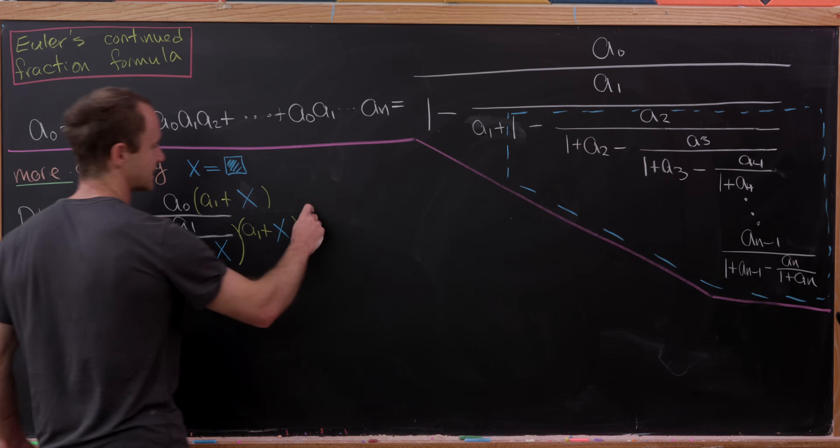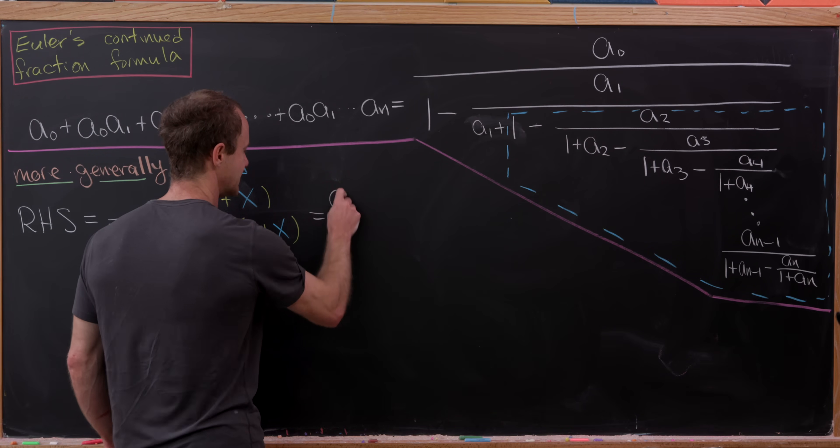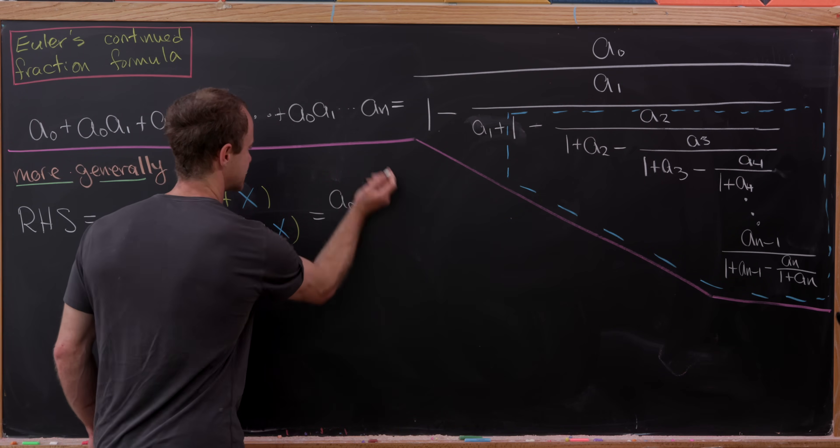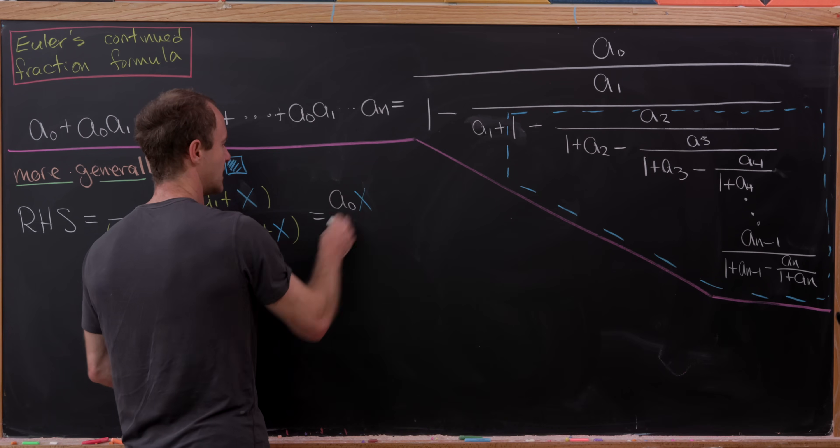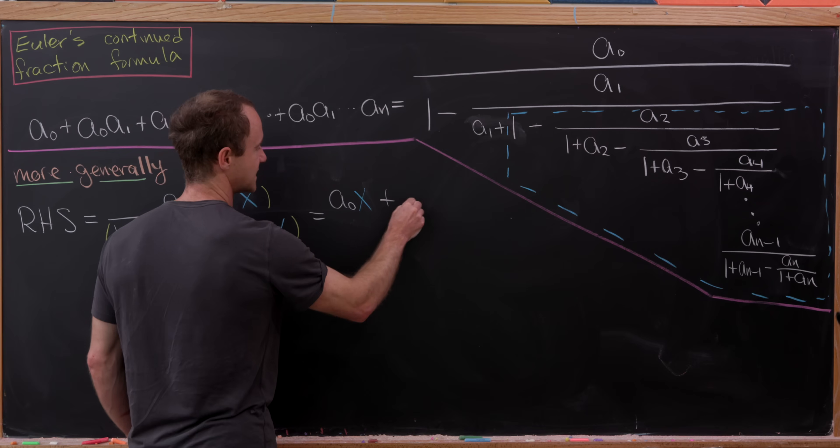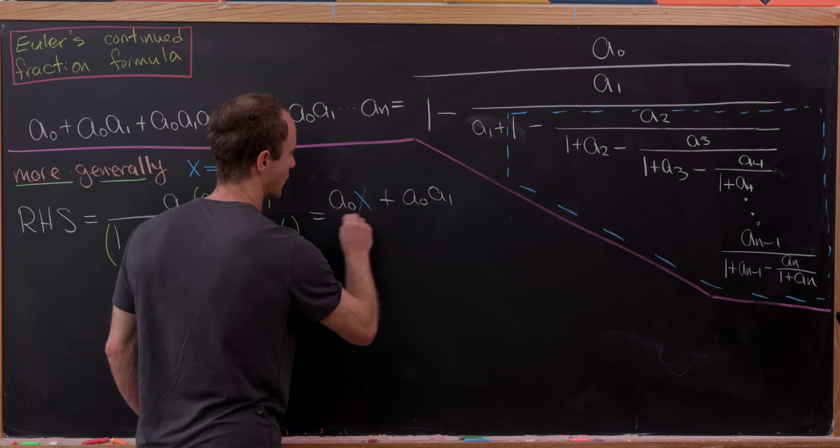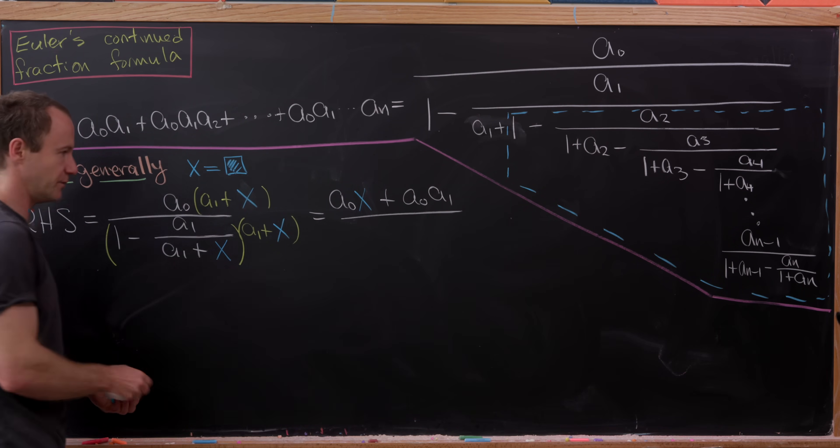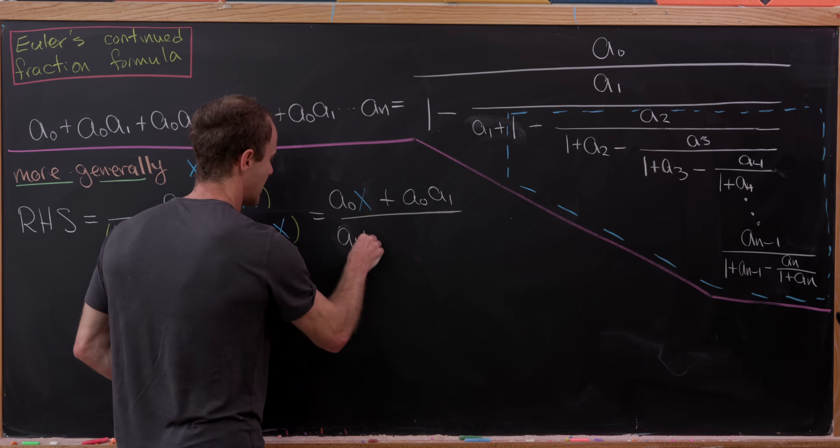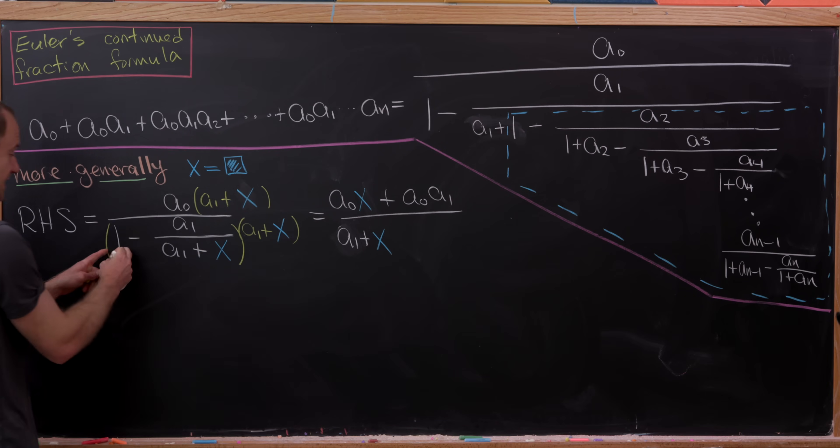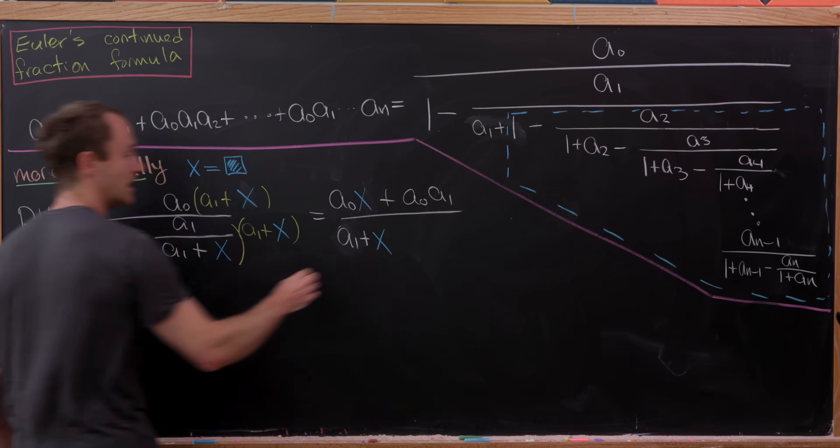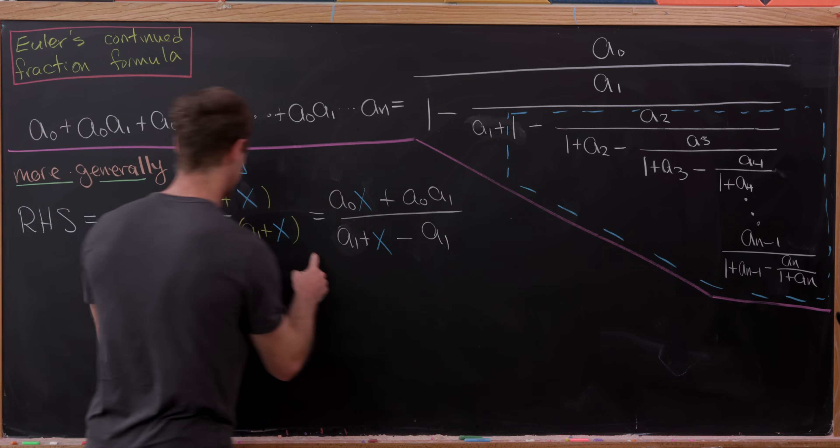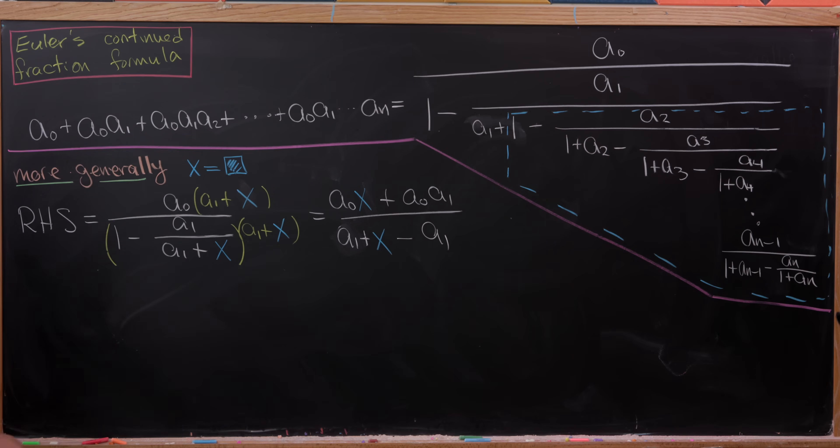So let's see what that leaves me with. I'll have a0 times x, that's happening in the numerator, and then plus a0 times a1. So there's my numerator. And then my denominator will be a1 plus x. So that's from this a1 plus x moving over to this one and then minus a1. So that would be this multiplying into the fraction right there.